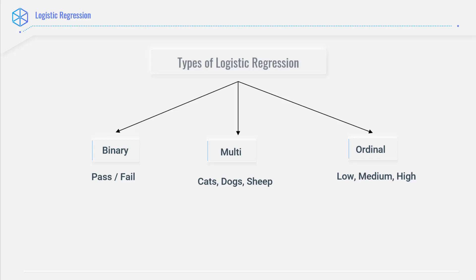Binary classification is basically classification into two classes. Multi classification has multiple classes — more than two. And ordinal is basically just like a range, so some range say 0 to 10 will be low, 10 to 20 will be medium, and above that will be high.